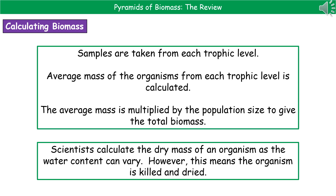When talking about mass, we use what's called the dry mass — this means we've removed the water. We do this because if we're talking about living things with water in them, the water content can vary depending on whether they've just had a drink or are dehydrated, and therefore it would affect the mass of the organism at different points in the day. The downside to working out the dry mass is that we have to kill and dry the organism in order to measure it.